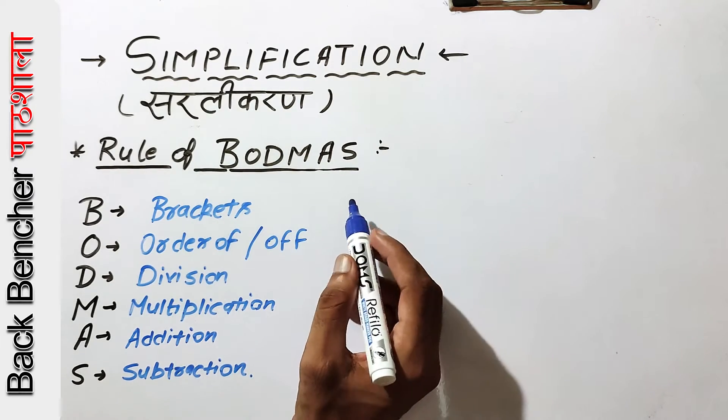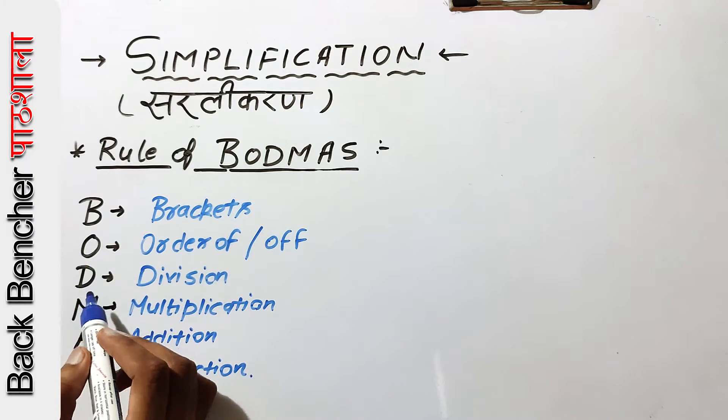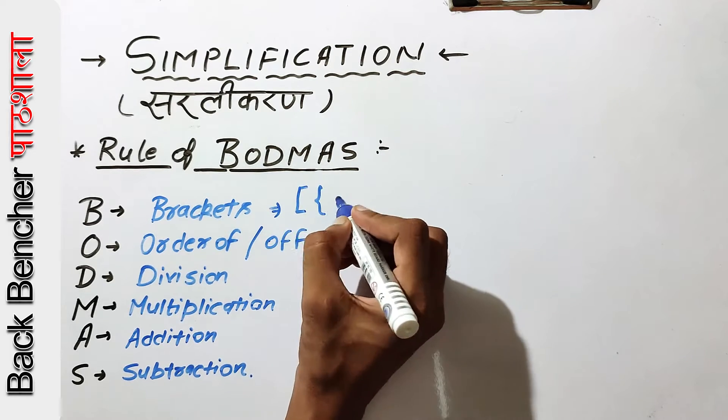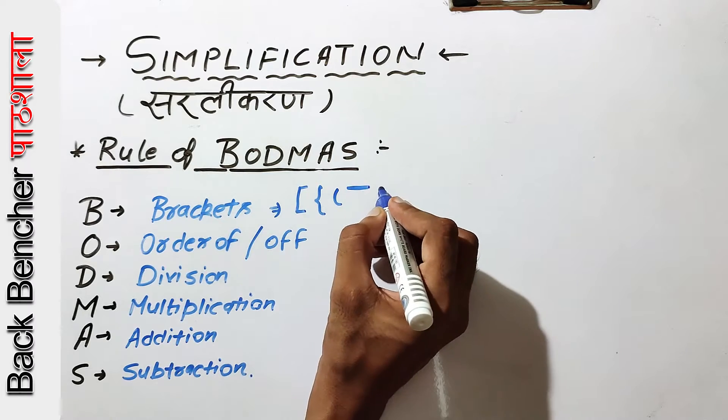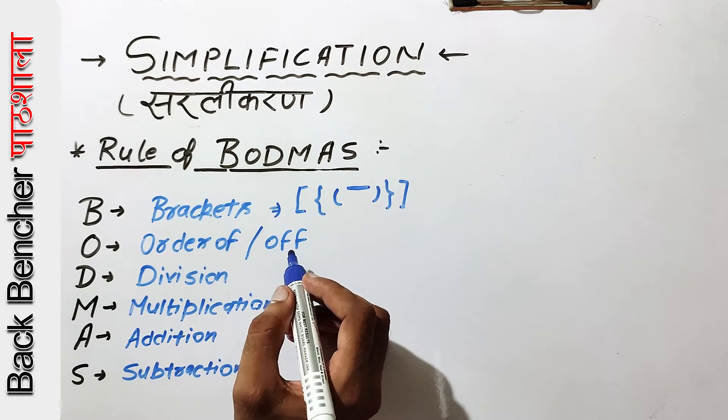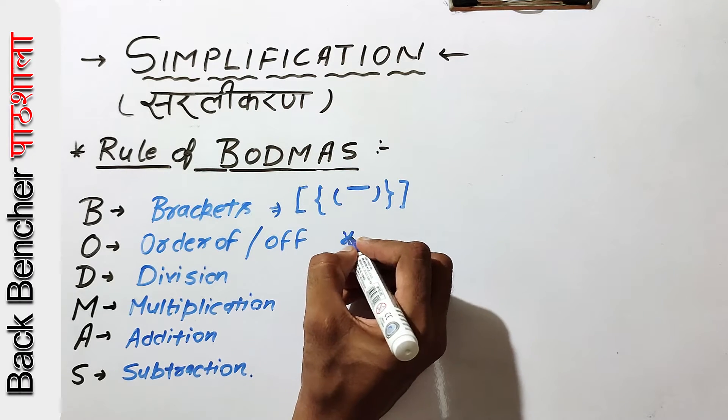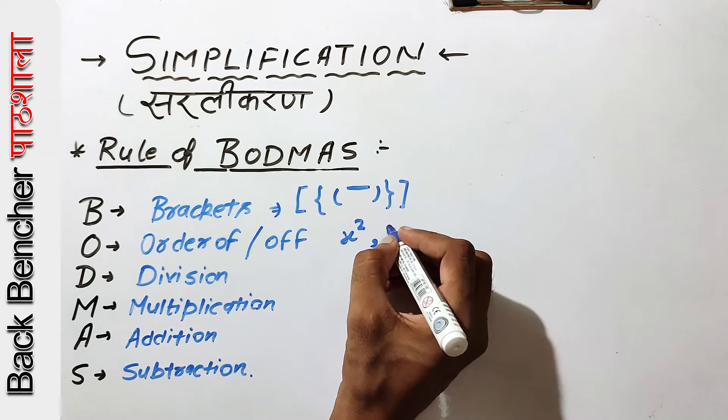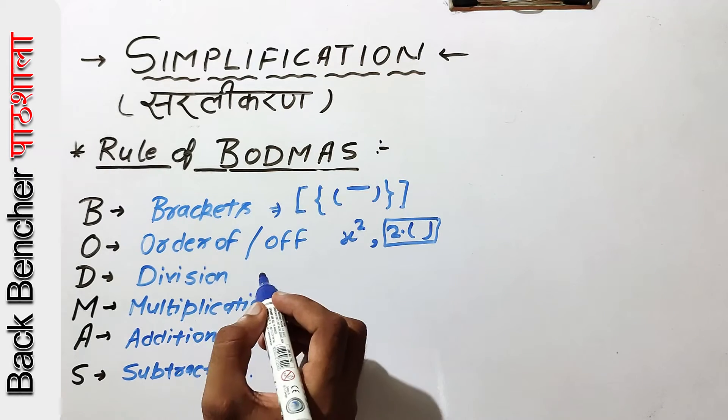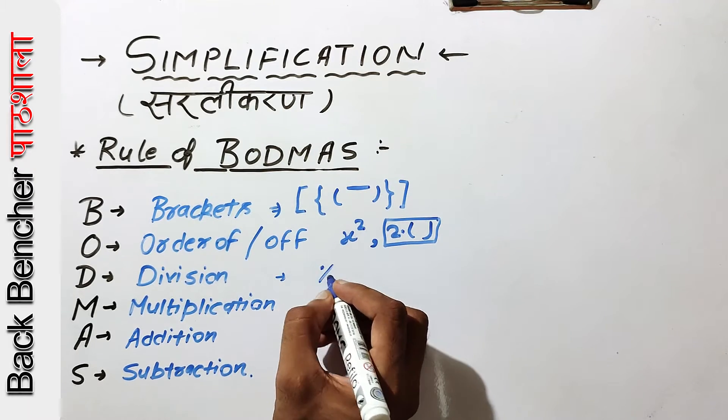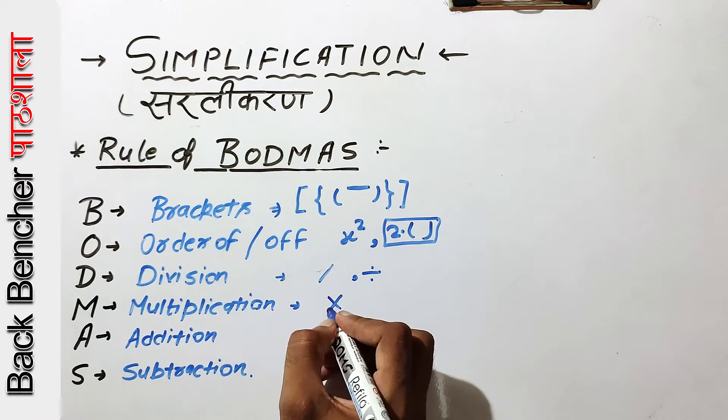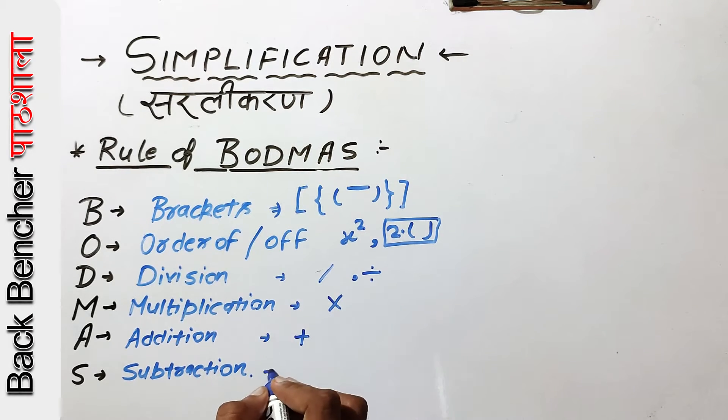First, we will learn about BODMAS. B stands for Brackets. O stands for Order of or Offset, which is the power of x. D stands for Division. M stands for Multiplication. A stands for Addition. S stands for Subtraction.